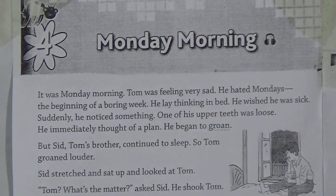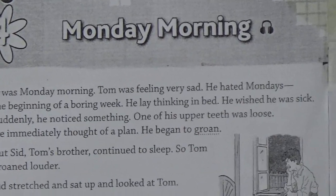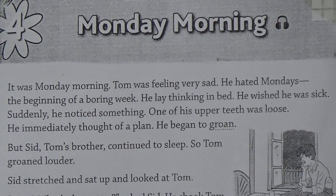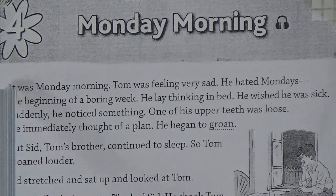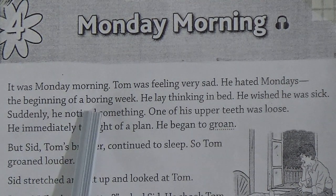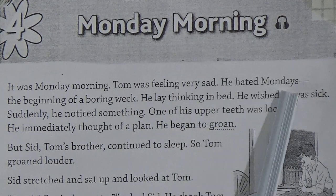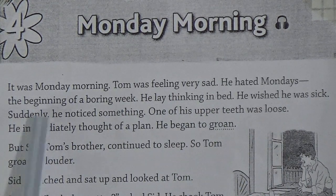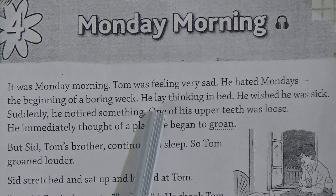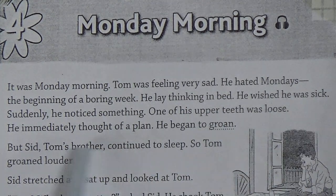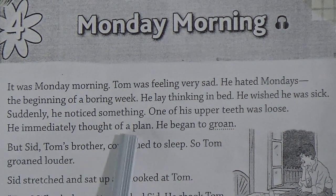Unit 4: Monday Morning. In this story we have 3 characters — Tom, his younger brother Sid, and their aunt, Aunt Polly. It was Monday morning. Tom was feeling very sad; he hated Mondays, the beginning of a boring week. He lay thinking in bed and wished he was sick. Suddenly he noticed something.